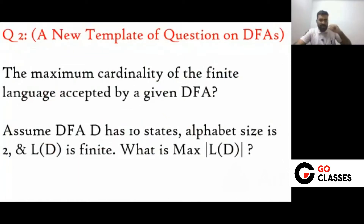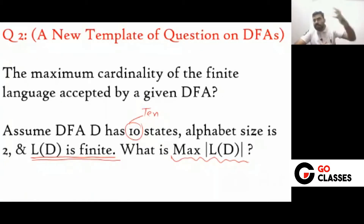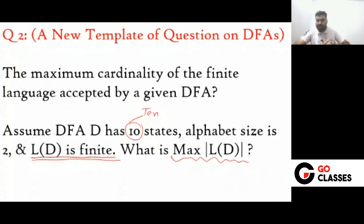Another new template question. You have a DFA that has 10 states and alphabet size is 2. Given that the language is finite, what is the maximum cardinality? If a DFA is accepting a finite language, what is the largest cardinality possible for that language?